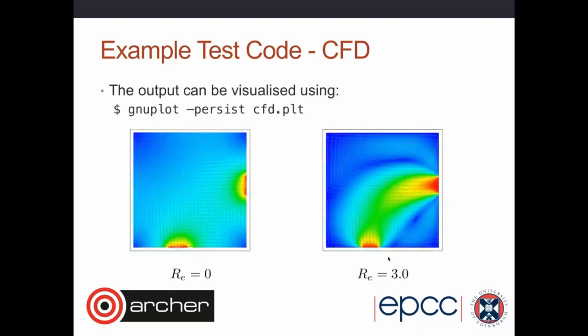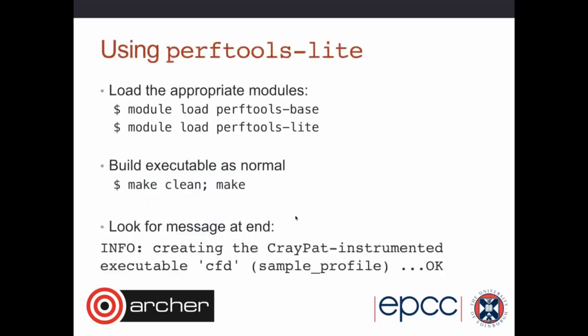If you want, you can plot the output of this code with GNUplot and see the two different regimes — no vorticity versus vorticity — just for playing around with the code afterwards.